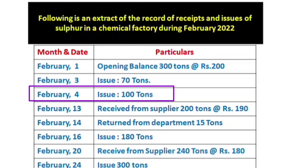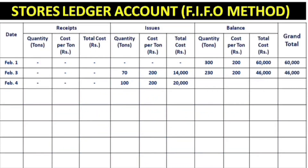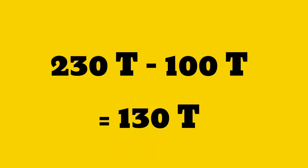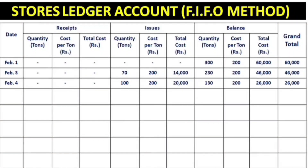On February 4, we issue 100 tons. The rate is the same — 200 rupees each, giving a total of 20,000. The balance: starting at 230 tons, minus 100 tons, leaves 130 tons at 200 rupees each, totalling 26,000.